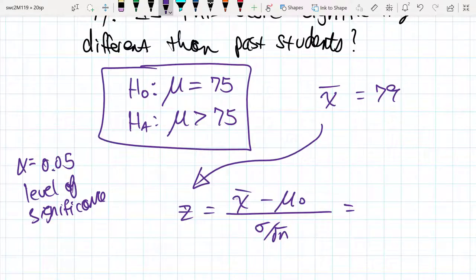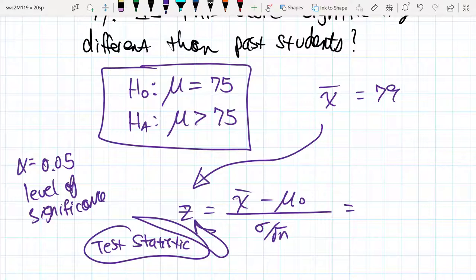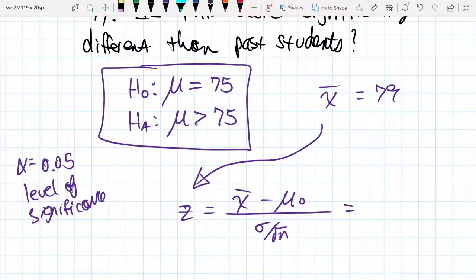Now that we have our test and we have developed a sample, we can figure out the test statistic. The test statistic in this case, we have 79 minus 75.